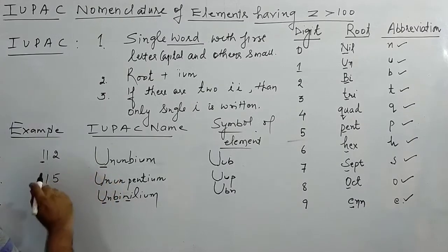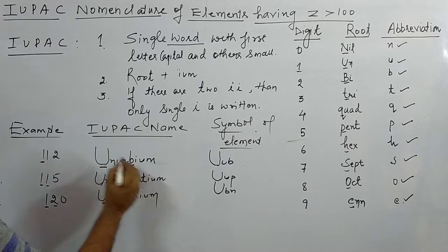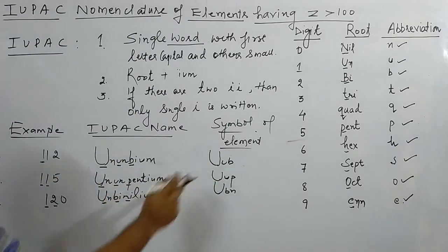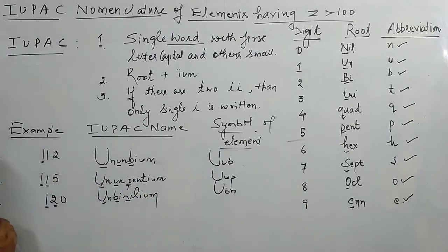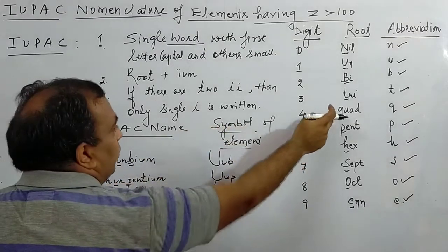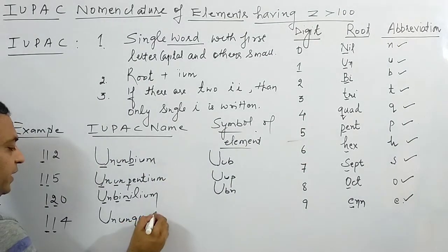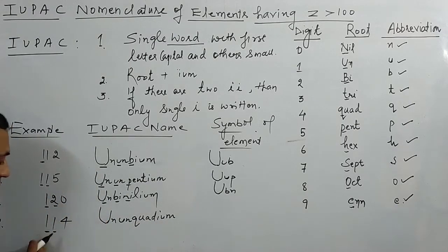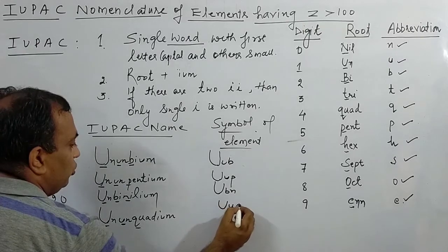Fourth example: atomic number 114 — digits 1, 1, 4. For 1 → un, again 1 → un, for 4 → quad. Add IUM: un-un-quad-ium, giving IUPAC name Ununquadium. For the symbol: un → U, un → u, quad → q. So the symbol is Uuq.